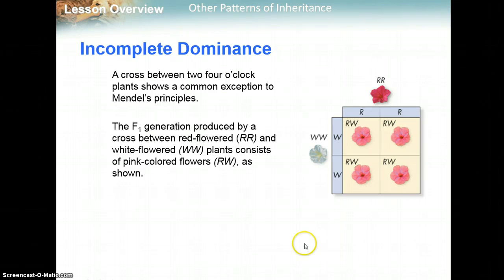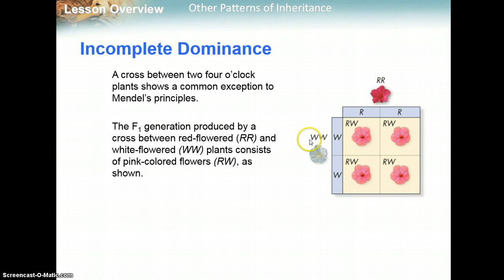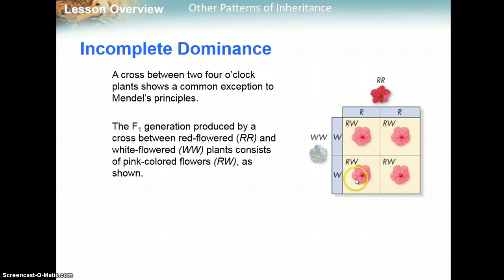Here we have the parent generation: big R, big R for red, and big W, big W for white. When you cross those, you get all these heterozygous big R, big W. And you see that the phenotype is actually pink, which is a blending of the parent phenotypes.